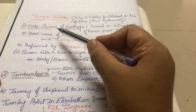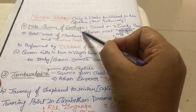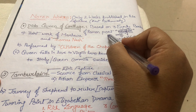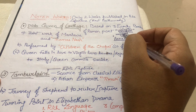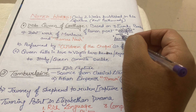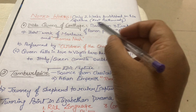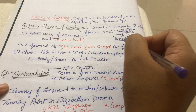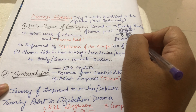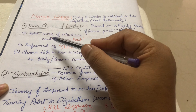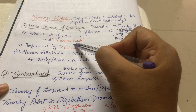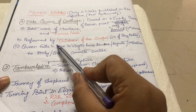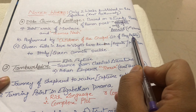The first important work is Dido Queen of Carthage. It is based on the three early books of the Roman poet Virgil, the first of which was the Aeneid, which was very famous. This was a joint work by Christopher Marlowe and Thomas Nash. It was performed by the Children of the Chapel, a company of boy actors.